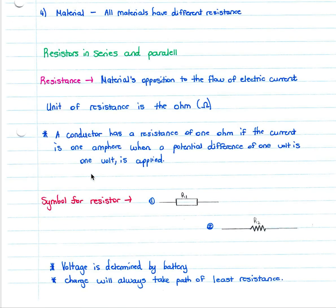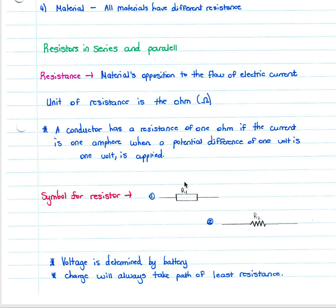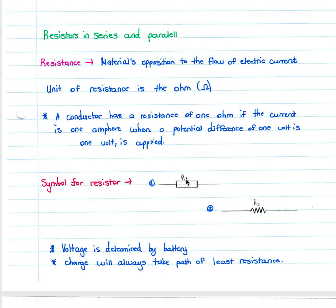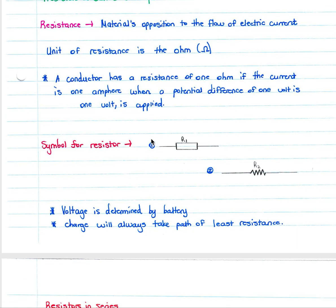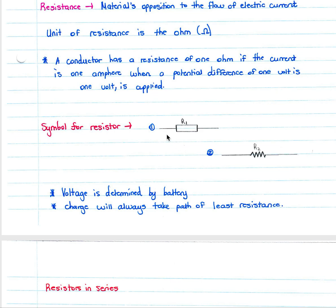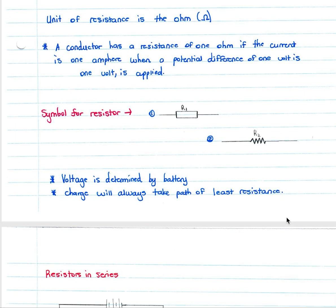Resistance is a material's opposition to the flow of electric current, measured in ohms. A conductor has a resistance of one ohm if the current is one ampere when a potential difference of one volt is applied — directly from R equals V over I. Resistors can be drawn in two different symbols in circuit diagrams. Remember that voltage is determined by your battery, and charge always takes the path of least resistance.